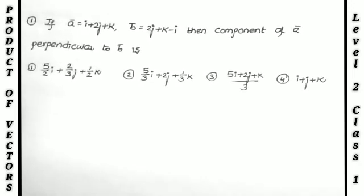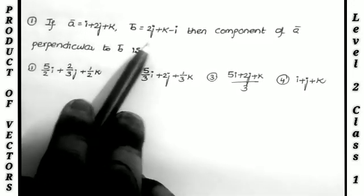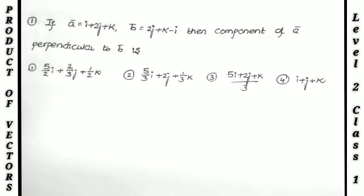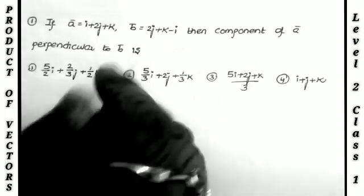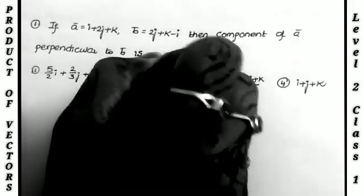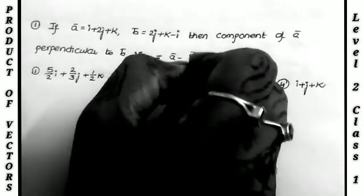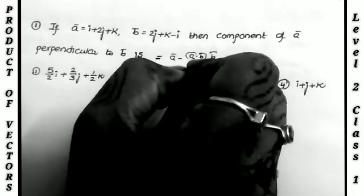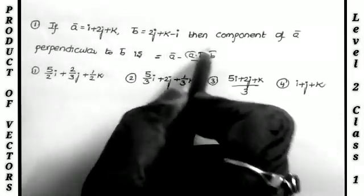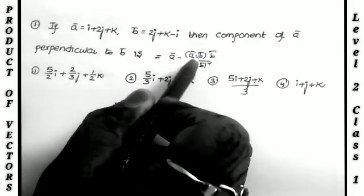First problem: if ā = i + 2j + k and b̄ = 2j + k − i, what is the component of ā perpendicular to b̄? The formula for the component of ā perpendicular to b̄ is: ā minus the component of ā along b̄, which is (a·b / |b|²)·b̄. So the formula is ā − (a·b · b̄ / |b|²).